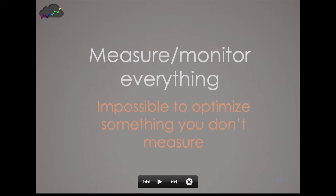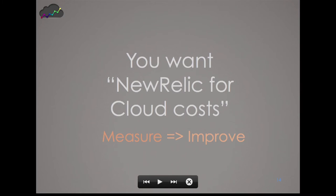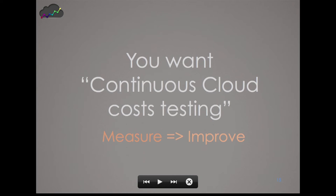The second rule is: measure everything. Monitor your costs. There's no way you're going to be able to improve something that you don't monitor. You want something like New Relic, but for costs. You're already monitoring performance — it's pretty natural to do the same for cost to improve your app.